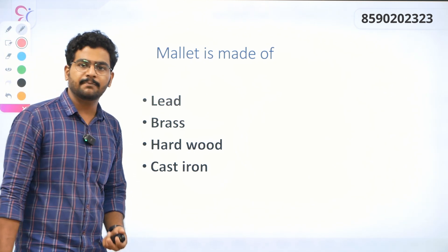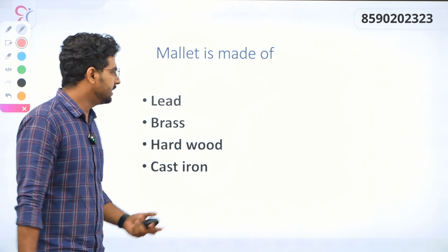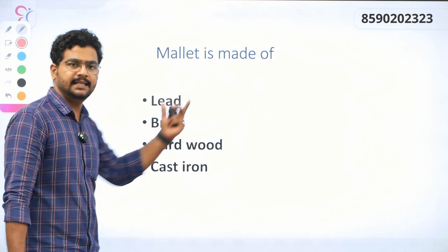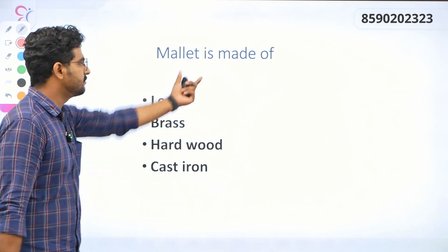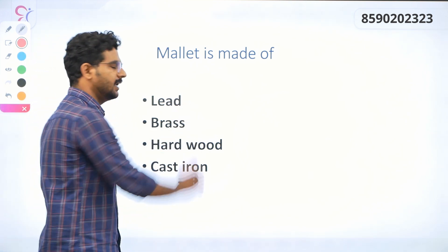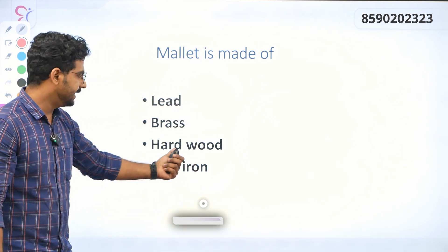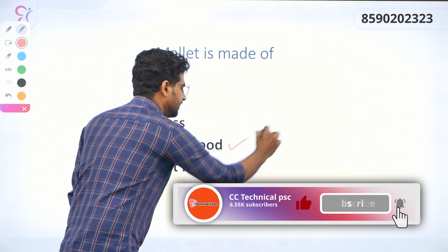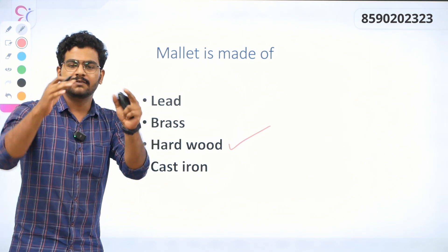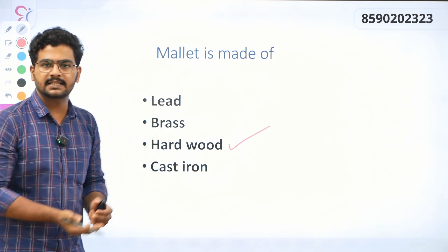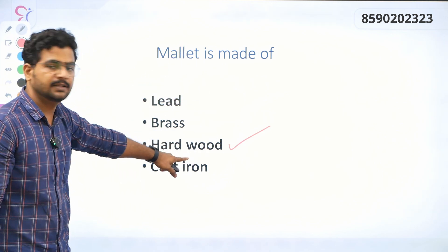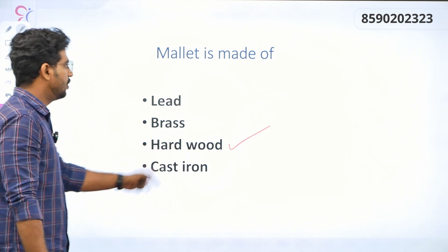Mallet is made up of — what is a mallet? If you have a sheet metal, you can use a mallet to shape it. Mallet is made up of hardwood. It is made up of hardwood. We can bend and change the shape of the design using a mallet.